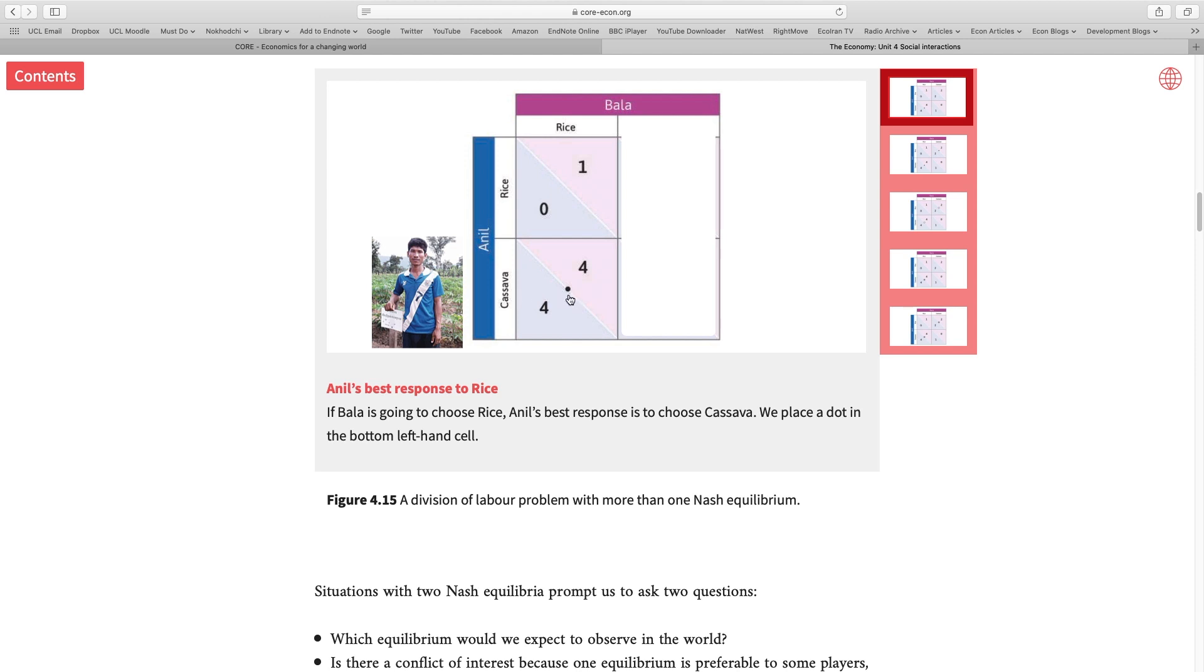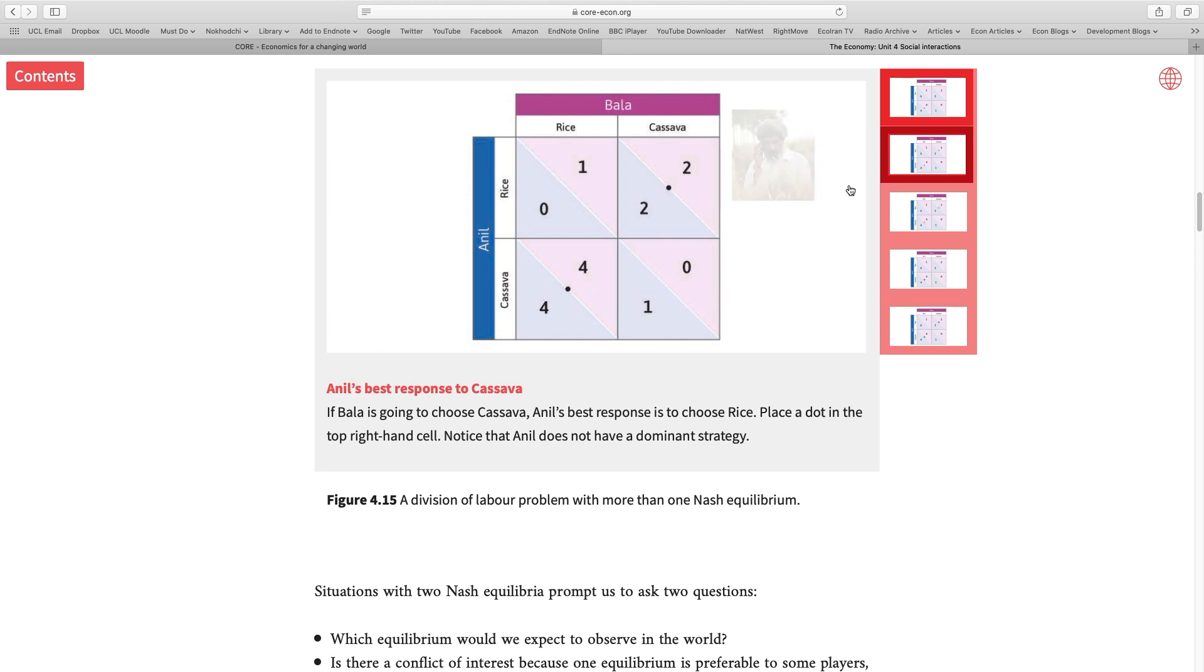What if Bala decides to produce cassava? If I produce rice I'll get two, if I produce cassava I'll get one, so my best response in this case is to produce rice and I'll put a dot here to represent my decision, Anil's best response in that case. Now let's get out of Anil's head and go inside Bala's head.